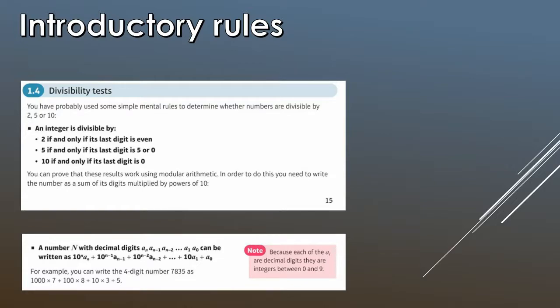So let's look at some introductory rules. An integer is divisible by 2 if the last digit is even, so basically the number is even. An integer is divisible by 5 if and only if the last digit is 5 or 0. And 10 if and only if its last digit is 0.